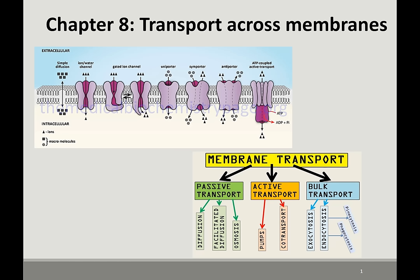Here we go with Chapter 8, which is Transport Across Membranes. This first slide is just to remind you that there are lots of types of transport mechanisms — lots of vocabulary, but most of it makes sense so you can figure out the definitions from the terms. Look through your Chapter Objectives; there are some specific transport mechanisms I want you to understand, like GLUT1, the ion exchanger, and the sodium-potassium pump.